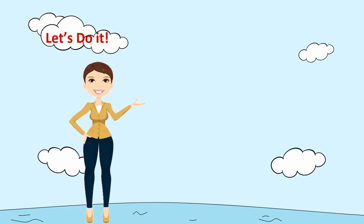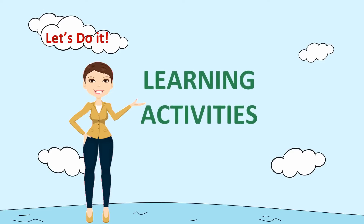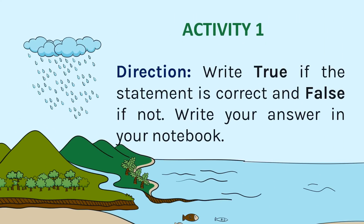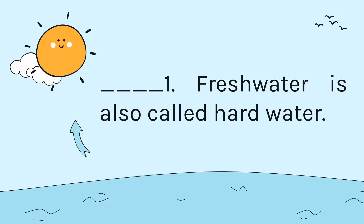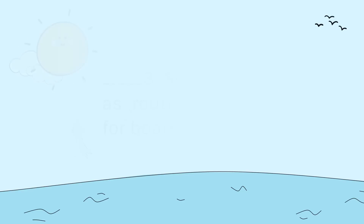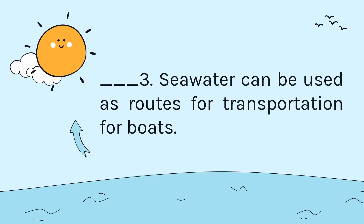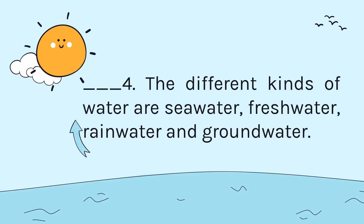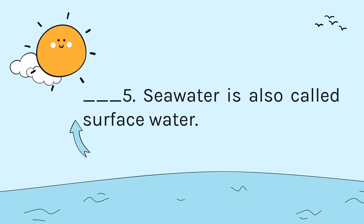Now you will perform some tasks in the learning activities prepared for you. Good luck! In Activity 1, write True if the statement is correct and False if not. Write your answer in your notebook. Number 1: Fresh water is also called hard water. Number 2: Groundwater is a safe source of water. Number 3: Seawater can be used as routes for transportation for boats. Number 4: The different kinds of water are seawater, fresh water, rainwater, and groundwater. Number 5: Seawater is also called surface water.